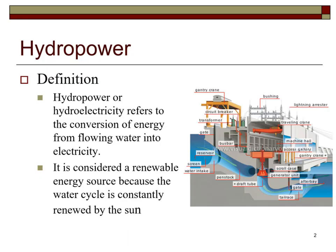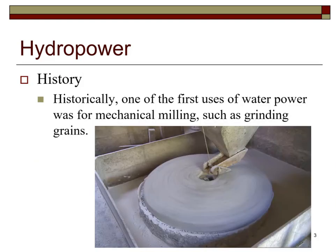Hydropower or hydroelectricity refers to the conversion of energy from flowing water into electricity. It is considered a renewable energy source because the water cycle is constantly renewed by the sun. One of the first uses of water power was for mechanical milling, such as grinding grain.